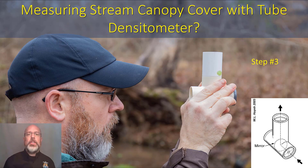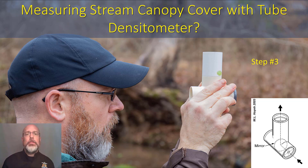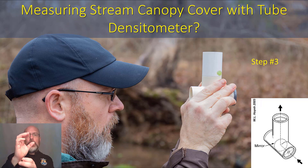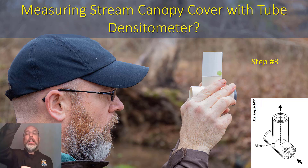Step three is to place the tube densiometer directly over top of each of the 10 evenly spaced measurement points along your transect. If you look at the bottom right of the diagram, you can see how the tube densiometer works. The light, as you're looking in, is reflected upward with a mirror so that you're looking at what's directly above your head.